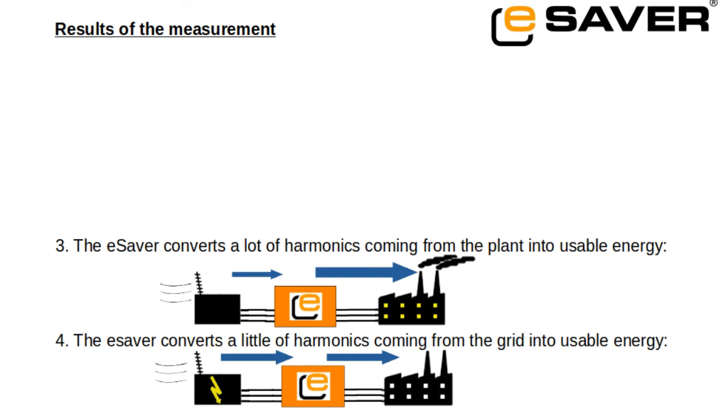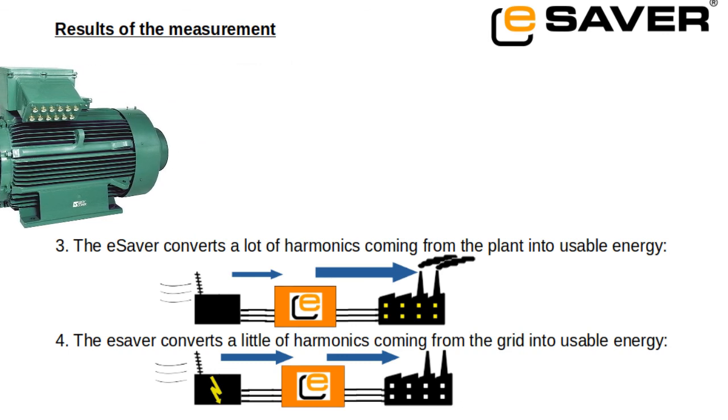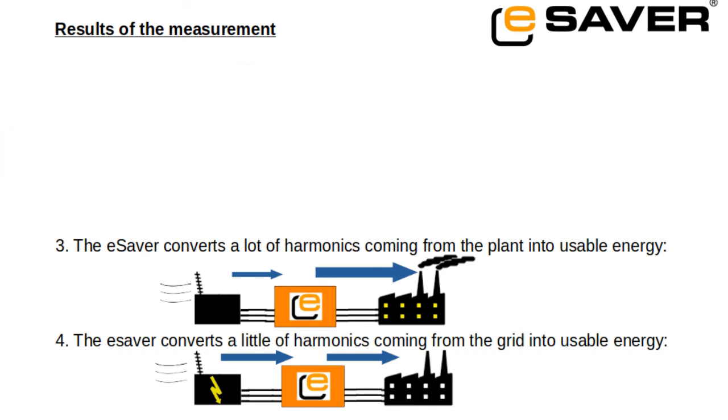From these last two results, it follows that the eSaver works efficiently when your system generates a lot of harmonics. So if you use devices with switching regulators such as regulated electric motors, the eSaver can save you electric power, carbon dioxide and money.